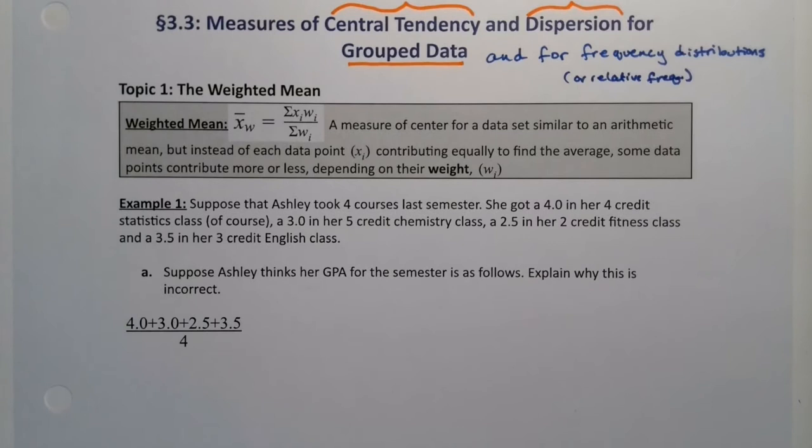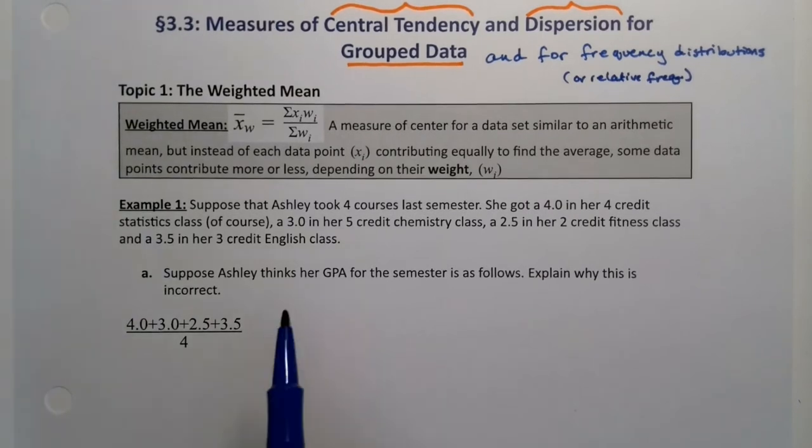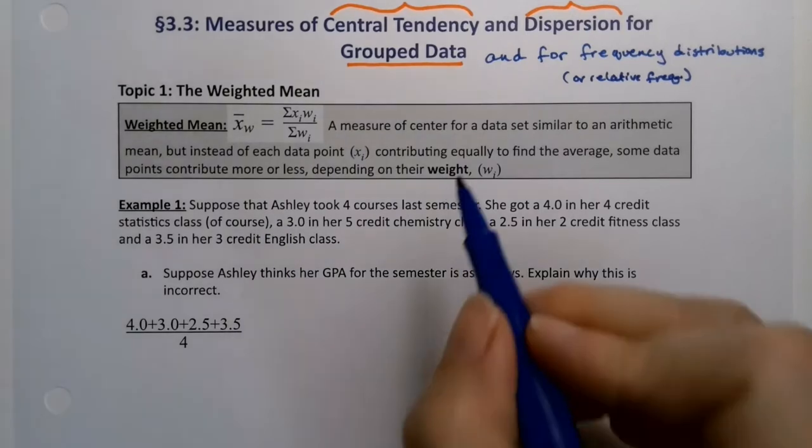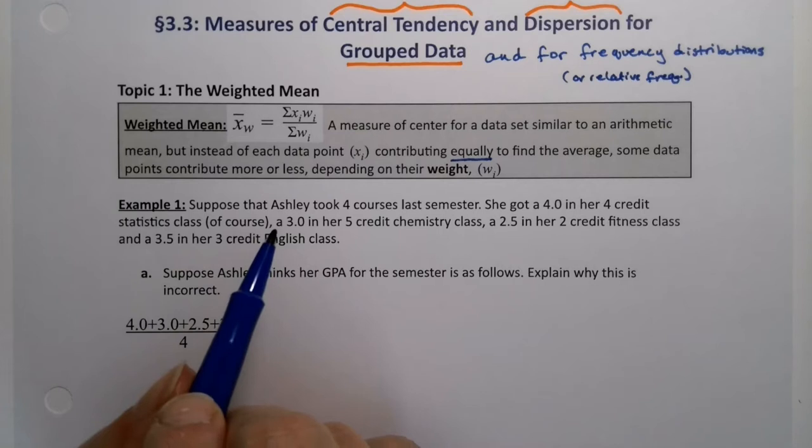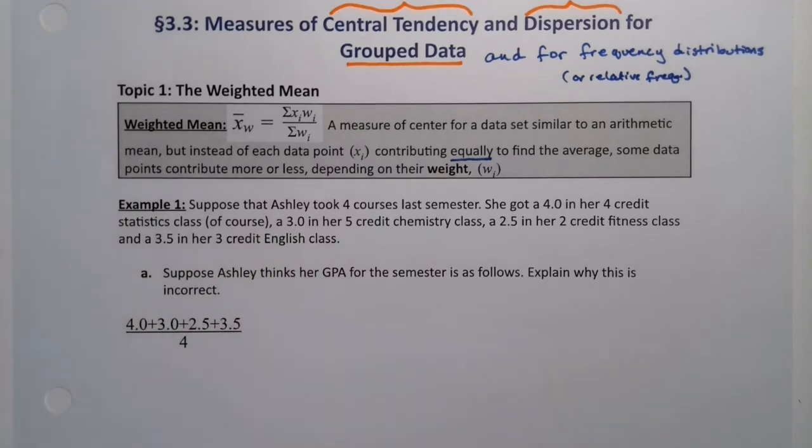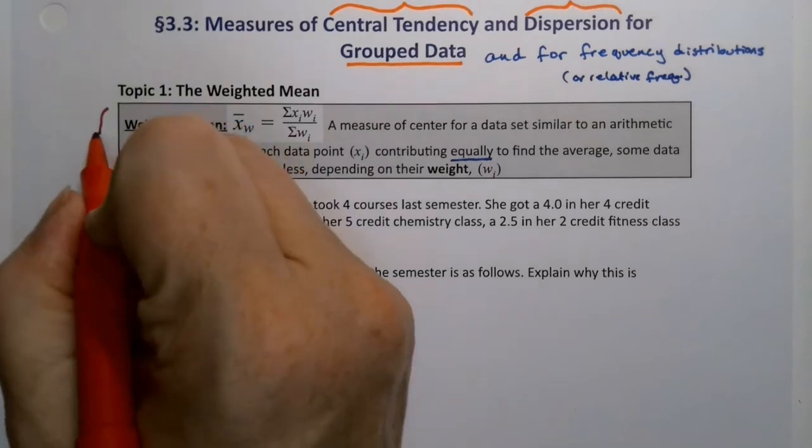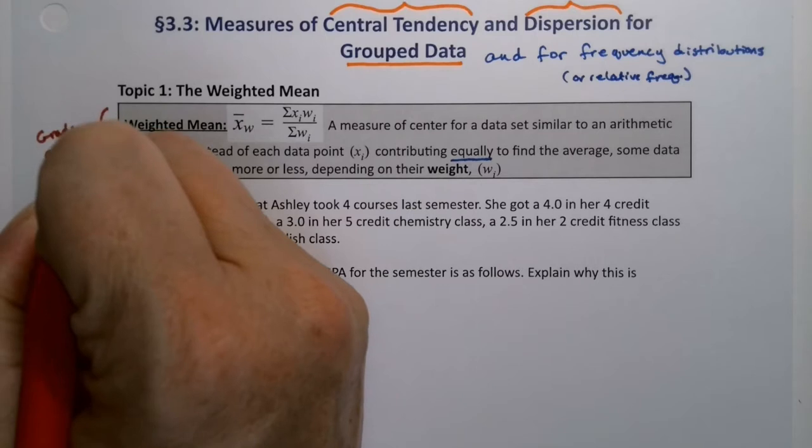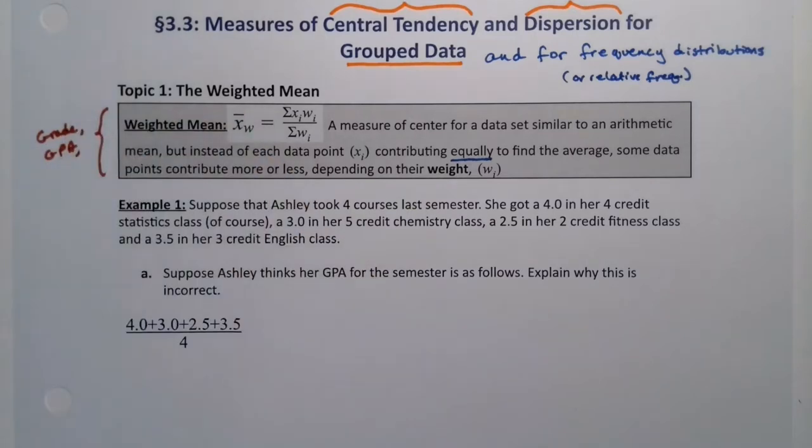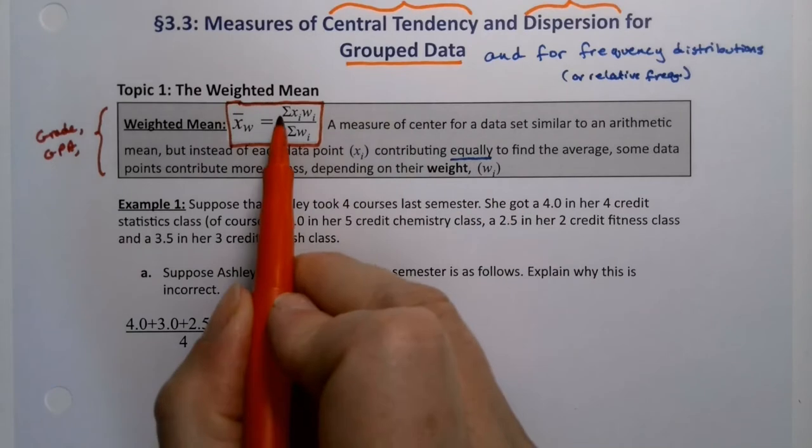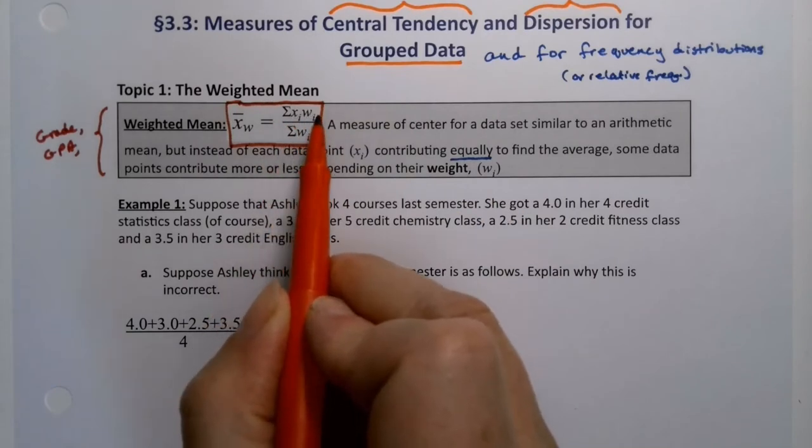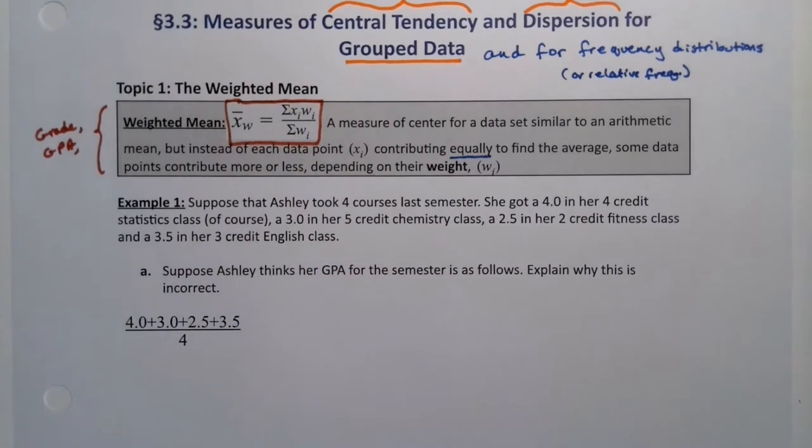Let's look at the weighted mean. It's slightly different because we don't usually think of it as a frequency distribution, but it sort of is. The weighted mean is a measure of center for a data set similar to an arithmetic mean, but instead of each data point contributing equally to find the average, some data points contribute more or less depending on their weight. Some values are worth more than others. This is very important because this is how you find things like your GPA, your grade in a class, et cetera. There are a lot of weighted means out there. The formula is the sum of all your values times their weight, divided by the sum of the weights.